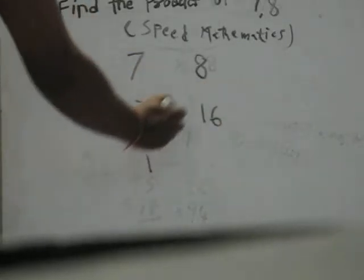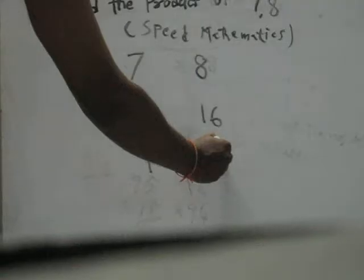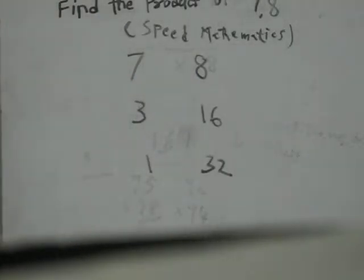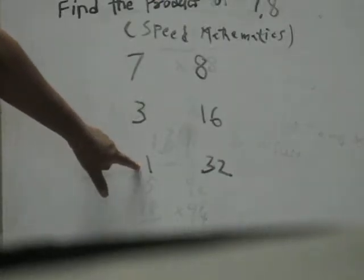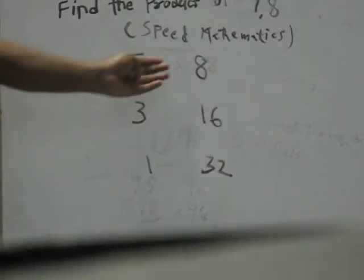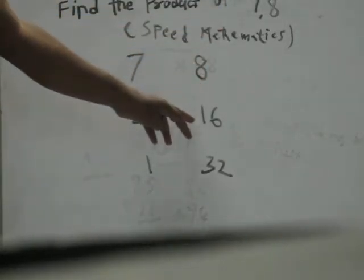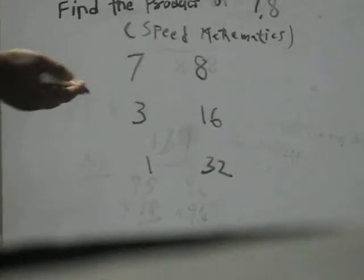So 8, double of 8 is 16. 16, 2 times is 32. Now you stop when you get 1 value here. So 7 half is 3, 3 half is 1. On the right side, 8 double is 16, 16 double is 32.